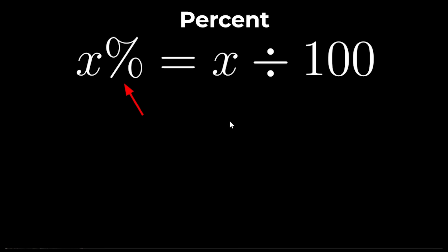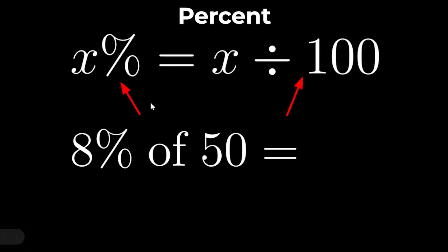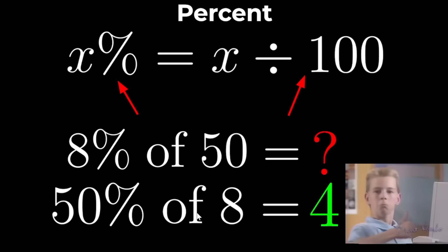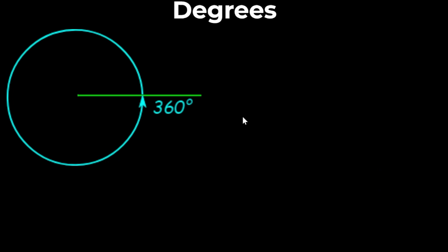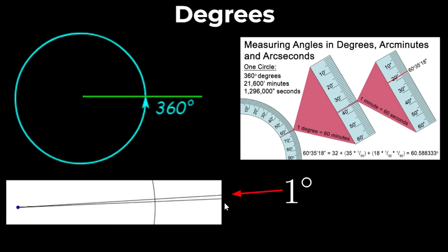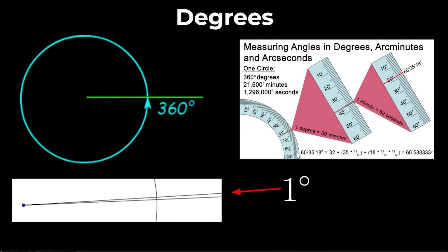Percent literally just means the exact same thing as divide by 100. So if you're dealing with a difficult percentage problem then try moving the percentage sign around because it doesn't actually matter where the percent sign goes and you can easily find the answer. Degrees: 360 degrees is one full turn so 1 degree is a teeny tiny turn. But you know what's even smaller than 1 degree? An arc second which is 1 degree divided by 3600.